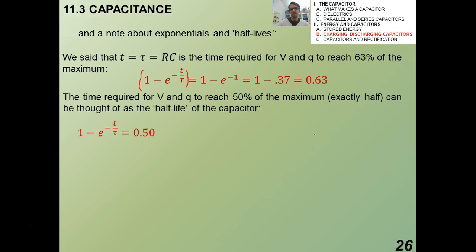Remember, in the last video, we said that when T equals tau, which is the product of R and C, that's the time required for V and Q to reach exactly 63% of their maximum. And the reason was because we had this equation 1 minus E to the negative T over tau. If we set T equals tau, then this exponential becomes negative 1, and the whole thing shakes out to be 0.63. Remember that this quantity right here was what we multiplied for V of T. We multiplied V naught by that quantity, and for Q of T, Q naught by that quantity.